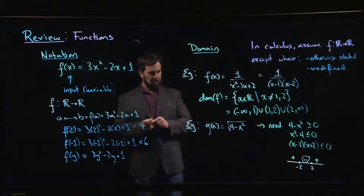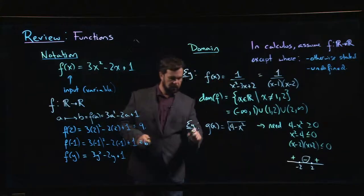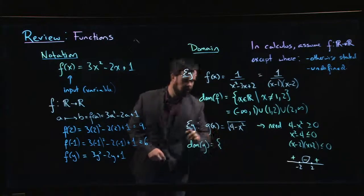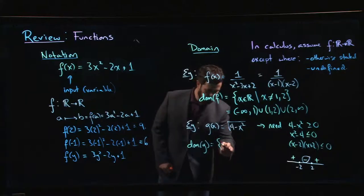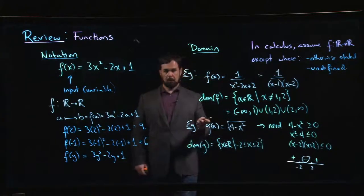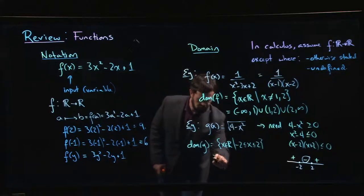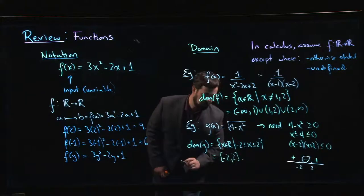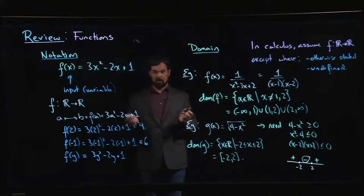So the domain of g in this case—again we could write it in set notation, set of all real numbers x such that x is between minus two and two. But of course that can also be easily written as a closed interval from minus two to two.